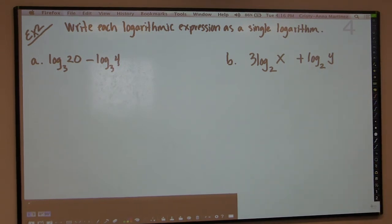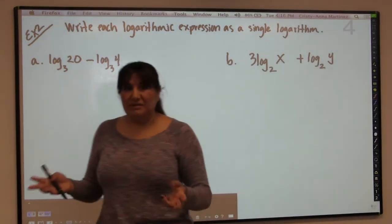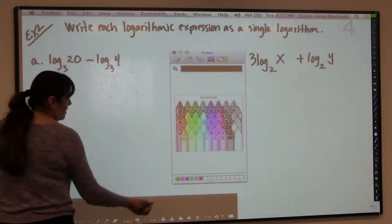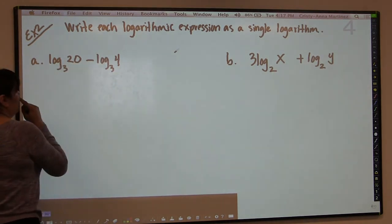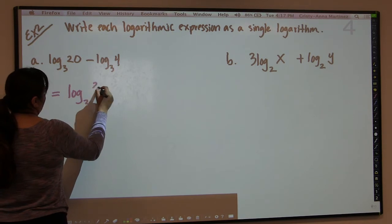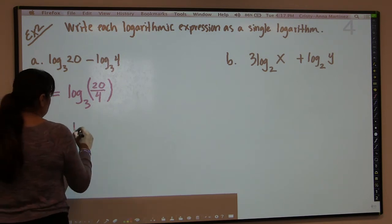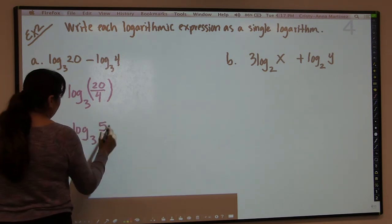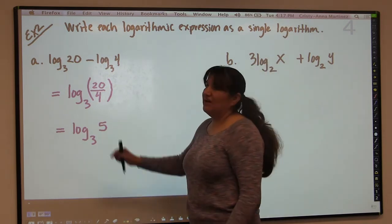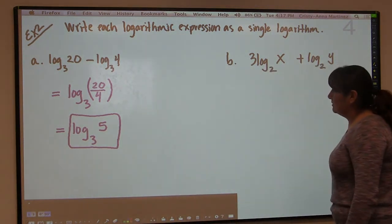Now we're writing each logarithmic expression as a single logarithm — taking multiple logarithms and writing as one. Here we have subtraction, so we use the quotient property and write log base 3 of 20 divided by 4. Since 20 divided by 4 is 5, we write log base 3 of 5 and leave it like that. We don't know 3 to what power is 5 — it would be a decimal — so we just leave the answer as log base 3 of 5.